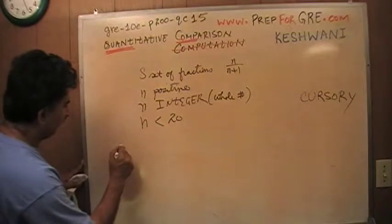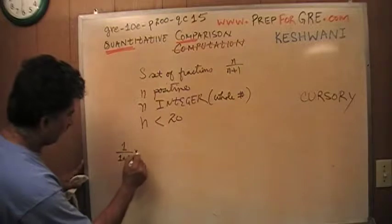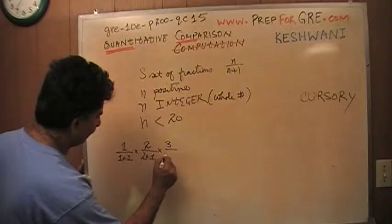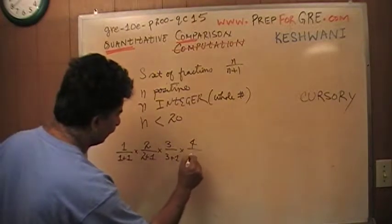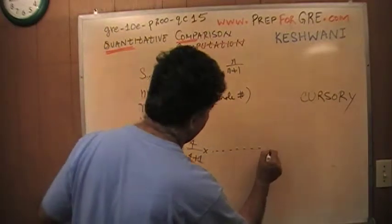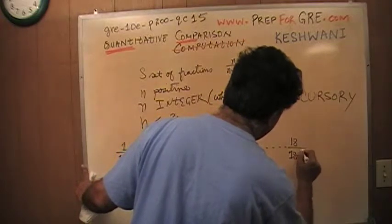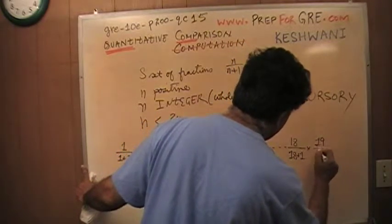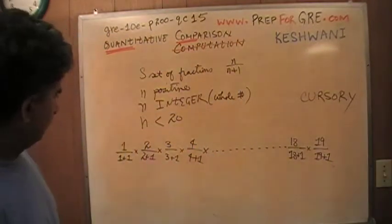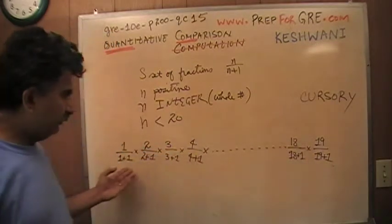The very first one is going to be if n is 1, it's going to be 1 over 1 plus 1, times 2 over 2 plus 1, times 3 over 3 plus 1, times 4 over 4 plus 1. You see? n over n plus 1 times so on and so on and so forth until I get 18 over 18 plus 1 and then 19 over 19 plus 1. So what happens when I take the product of all of these fractions?